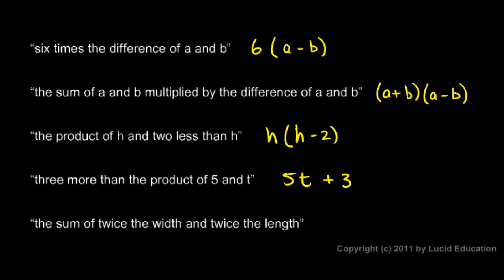And then this last one: the sum of twice the width and twice the length. We want to add — that's what a sum is — and we're adding these two things: twice the width and twice the length. Twice the width I could write as 2w, and twice the length I could write as 2l. So that's the sum of twice the width and twice the length: 2w plus 2l.